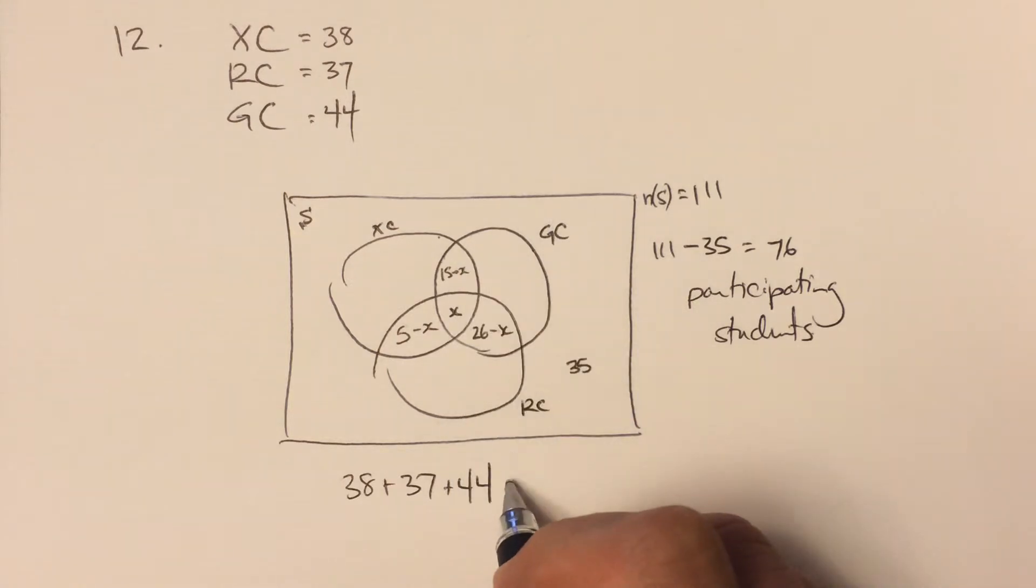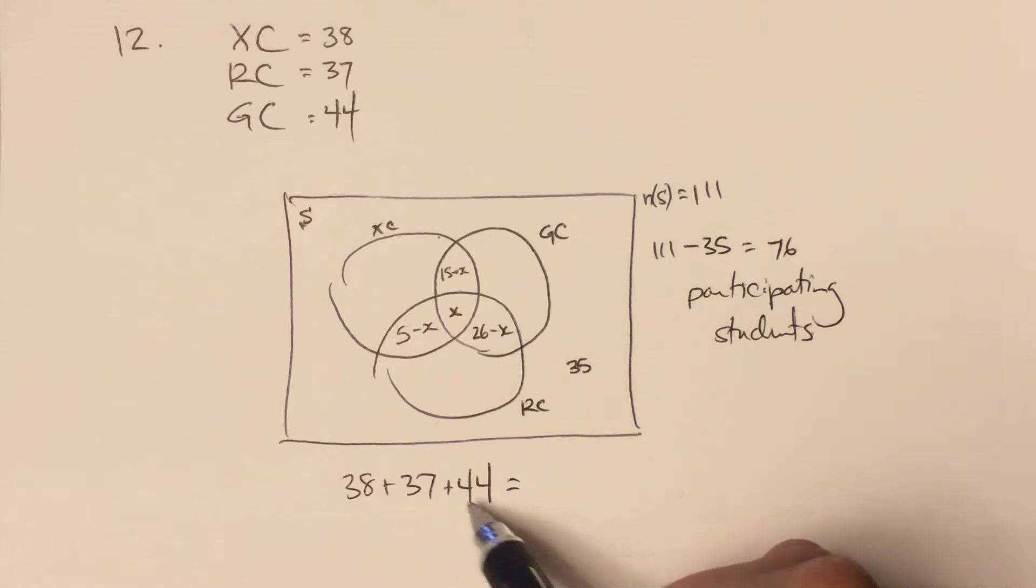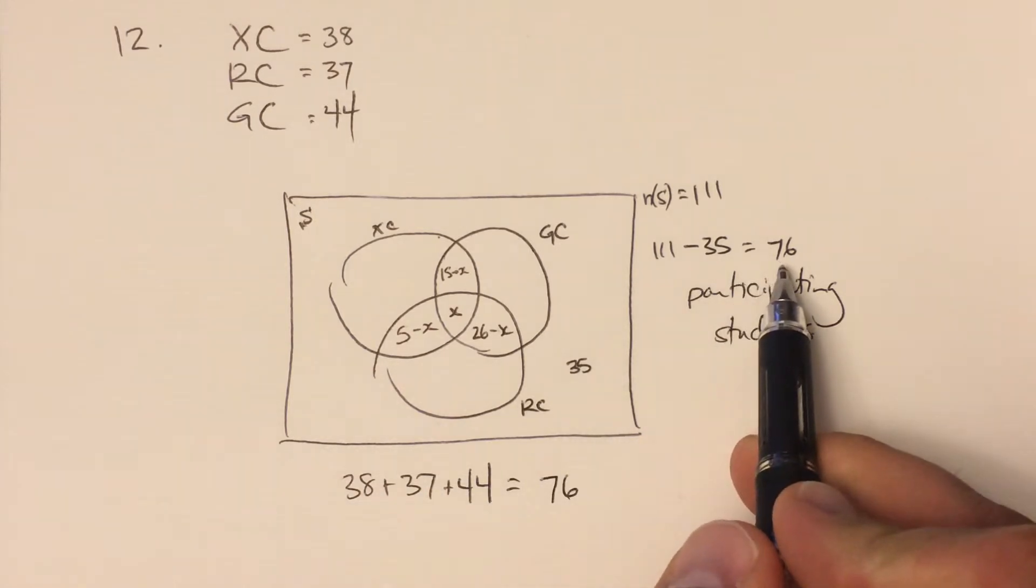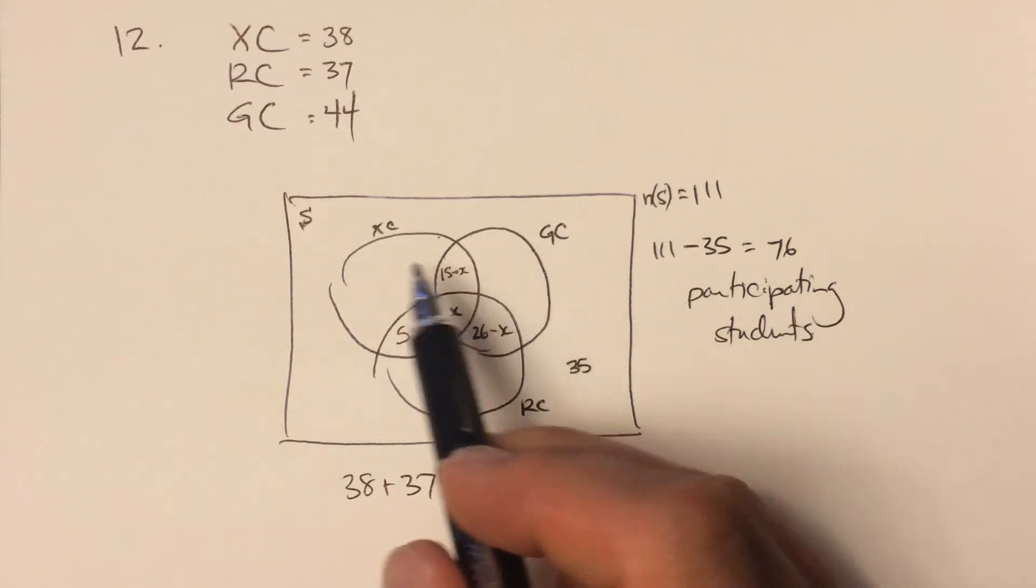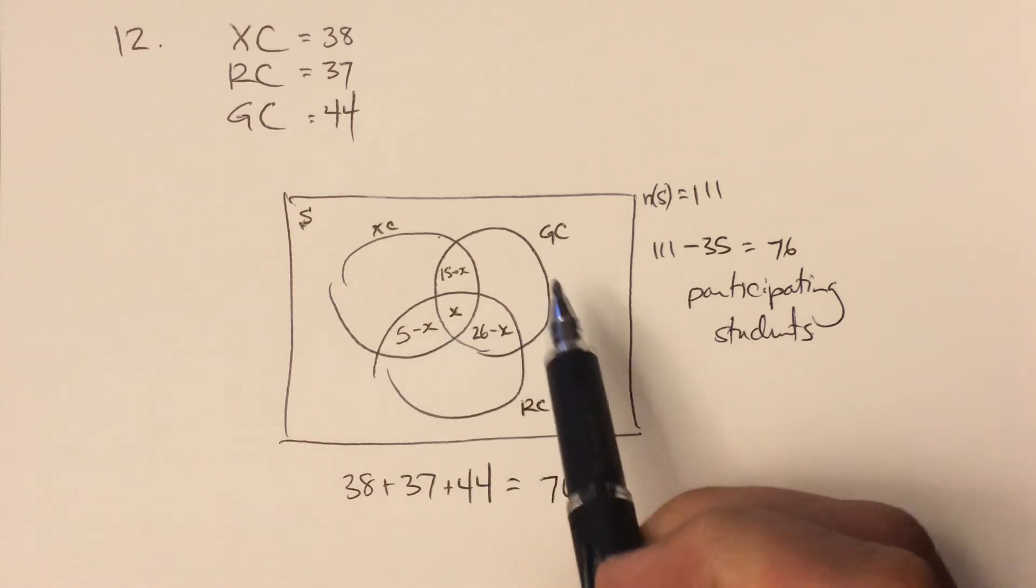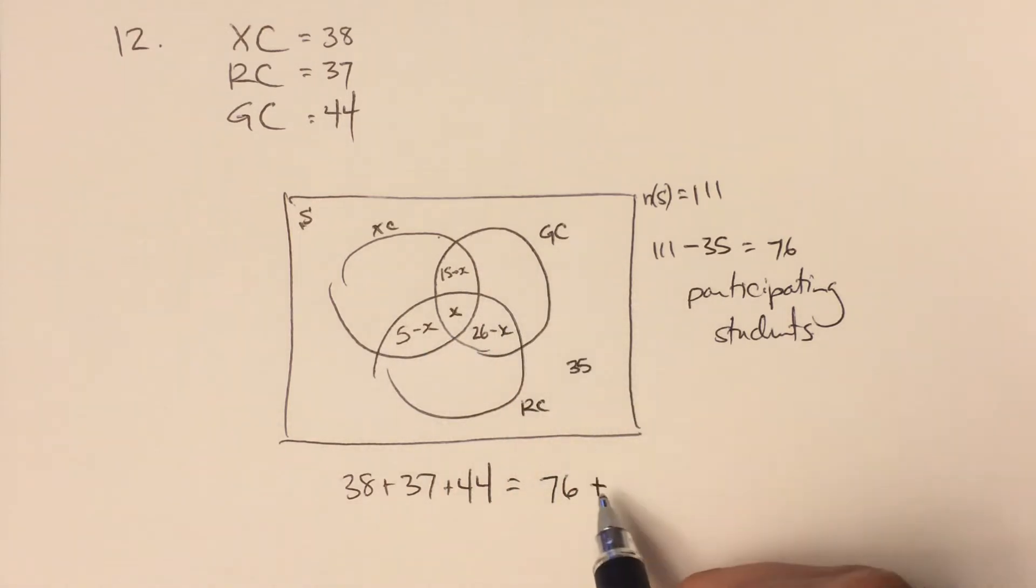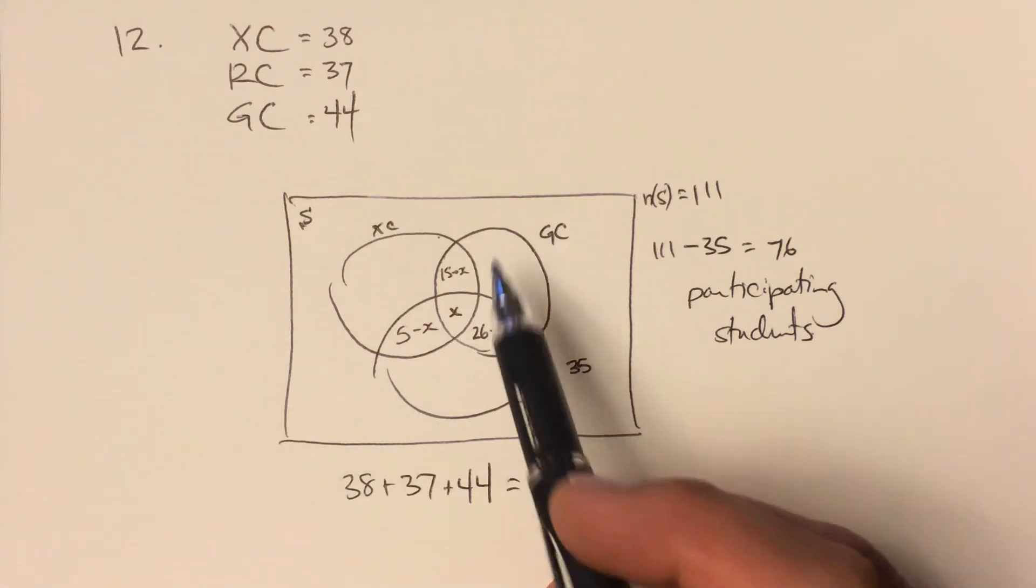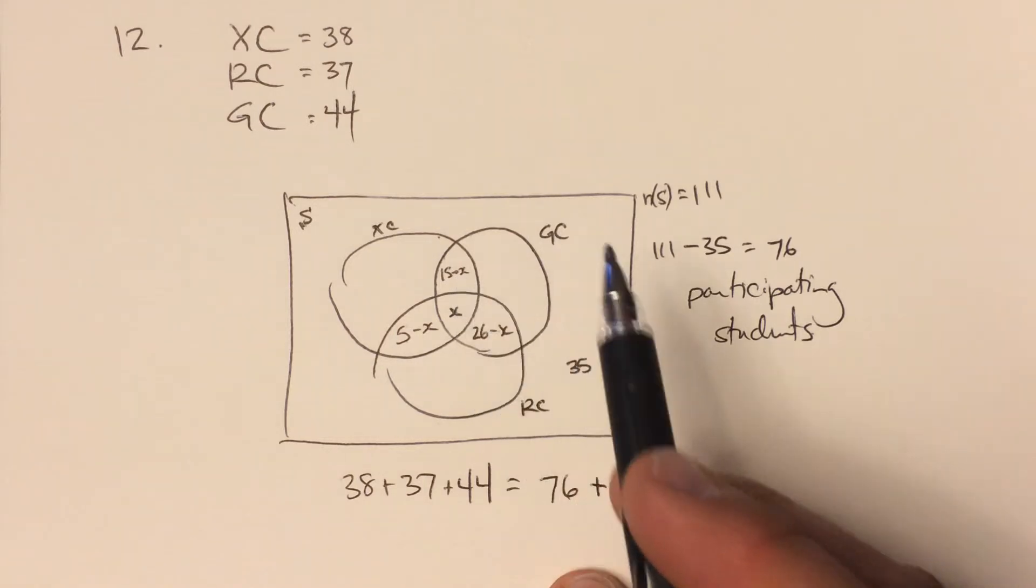So what that means is I know how much I have over-counted by. This value here is going to be 76, the actual number of students, plus my over-counting. There are 76 students in total in these three sections. So if I get more than that value, that's how much I've over-counted by. So let's see how to articulate this. We have over-counted by this amount here once. All right, 15 minus X, I've over-counted by once.